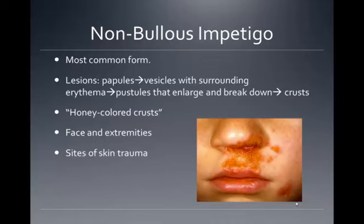The lesions usually occur at sites of skin trauma. The lesions progress from papules to vesicles with surrounding erythema, to pustules that enlarge and break down, and then form crusts with the characteristic honey-colored appearance. These lesions are commonly found on the face and on the extremities.